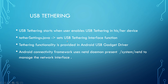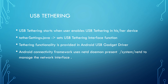All these details are present in TetherSettings.java. In this particular Java file, the USB tethering framework will set the USB tethering interface function, which will be invoked. The tethering functionality is provided in the Android USB gadget driver. The gadget driver registers itself with the network driver to bring up a network interface over USB. Android connectivity framework will use the NetD daemon present in /system/netd to manage the network interface for data service and to collect the necessary statistics.